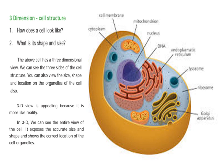In 3D, we can see the entire view of the cell — it exposes the accurate size and shape and shows the correct location of the organelles. What shape and size — it is like a cell, a vacuole, a mitochondria, a nucleus — where it is, is a very clear view. This is the 3D view of the cell.